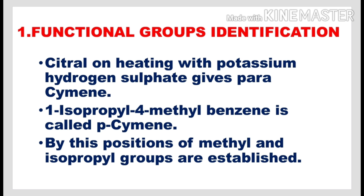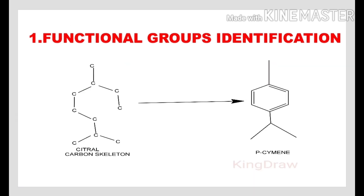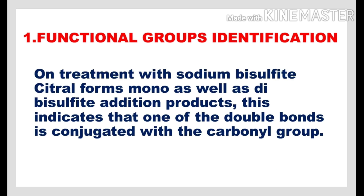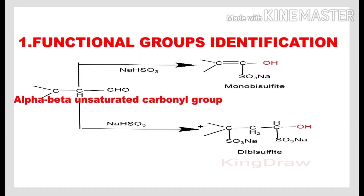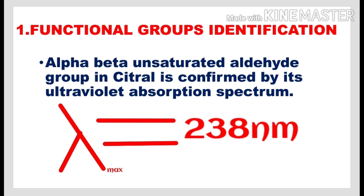Citrol on heating with potassium hydrogen sulfate gives para-cymene, which is 1-isopropyl-4-methylbenzene. By this reaction, we may expect the positions of the methyl and isopropyl groups in citrol. On treatment with sodium bisulfite, citrol forms mono as well as di-bisulfite addition products, indicating that one of the double bonds in citrol is conjugated with the carbonyl group. The lambda maximum value in the UV spectrum of citrol is 238 nanometers, confirming the presence of an alpha-beta-unsaturated aldehyde group in citrol.